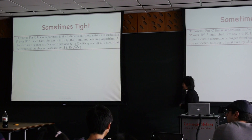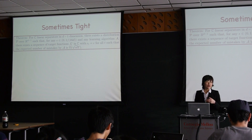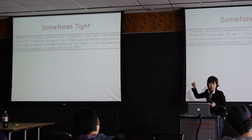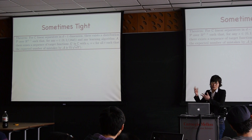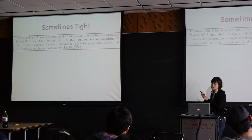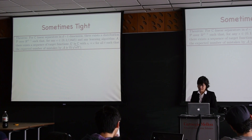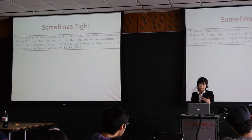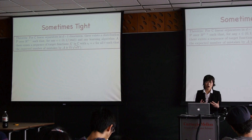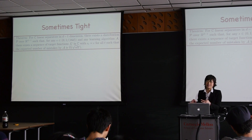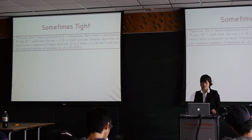In the special case where all epsilon_t equal some fixed constant epsilon, the upper bound becomes order square root of epsilon·d·T. We show this cannot generally be improved via a lower bound argument for the class of linear separators: there exists a distribution such that for any learning algorithm, there is a sequence of target functions with all epsilon_t equal to epsilon where the number of mistakes is at least square root of epsilon·d·T — so the bound is sometimes tight.